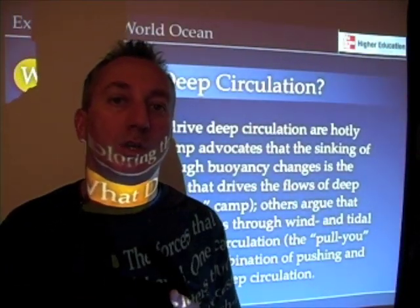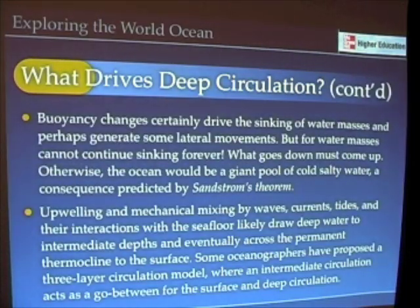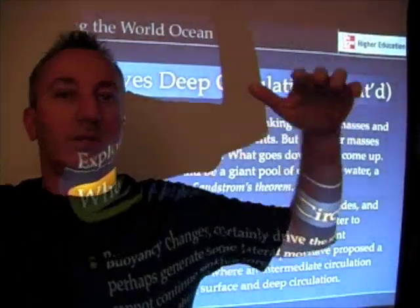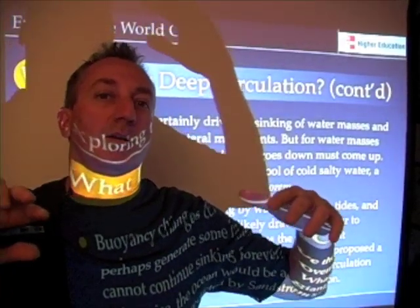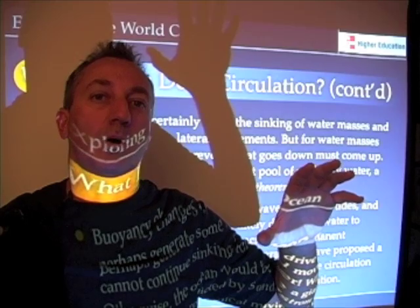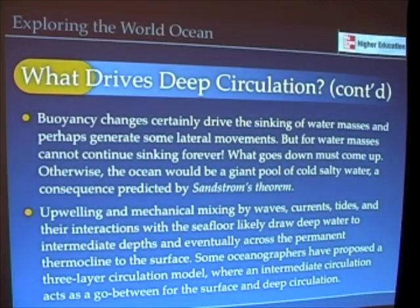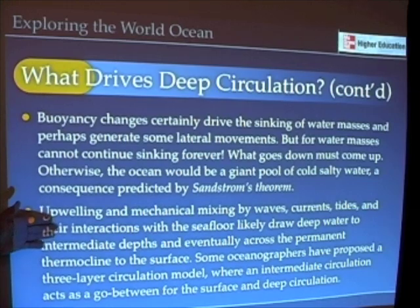Some of this comes from ideas presented about a hundred years ago, one of which relates to something called Sandstrom's theorem. Without getting into the details, if we just let the water sink, Sandstrom's theorem says it would just become a pool of cold salty water — at some point you have to mix up the ocean to keep that circulation going. You can check out that figure in the book. There are good arguments that upwelling and mixing are a part of the deep circulation as well.